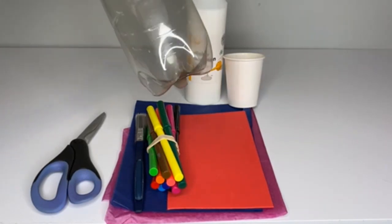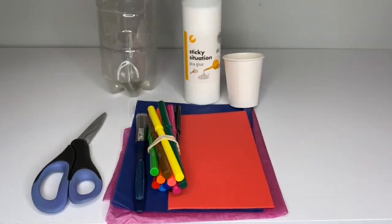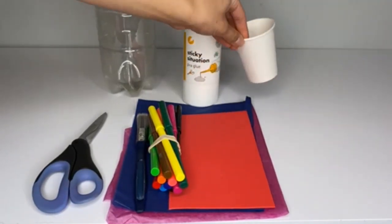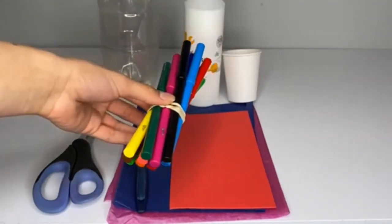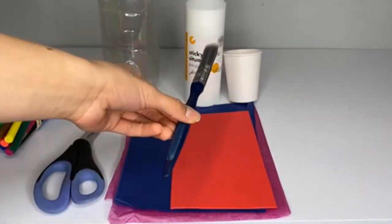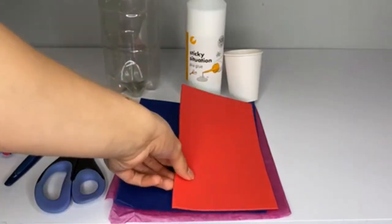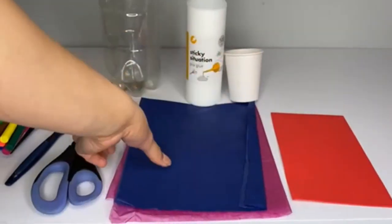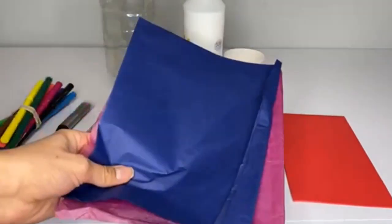So, for today's craft, you will need a plastic bottle, some PVA glue and a pot to put it in, some colored pens, a paintbrush, a piece of felt, some tissue paper, and also a pair of scissors.